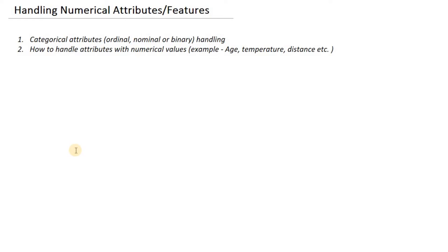Hi everyone. Till now we discussed how to build an ID3 decision tree when we have an attribute set or feature set which is categorical in nature — meaning the feature set could be either ordinal, nominal, or binary. But we never discussed how to handle features which are numerical in nature, such as the age of an individual, the temperature of a particular location, or the distance between two points. In this video, we will discuss how to apply information gain to such numerical attributes.